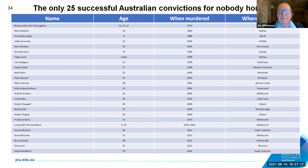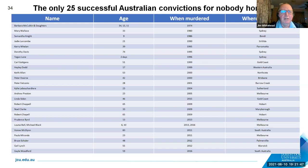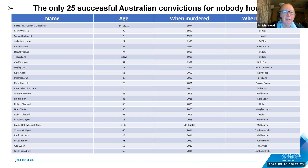I found 25 successful homicide convictions without a body in Australia — I believe there are a couple more but they're extremely hard to find in the databases. There are many more incidents where a conviction was either not tried for due to insufficient evidence, or where the accused was acquitted. The fact that we've had 25 successful convictions is a testament to how our justice system works, but also to how much work police have to do to prove people are dead when we have none of their bodies. Comparing to the USA, they have just over 400 successful convictions for no-body homicides, with a far greater population.